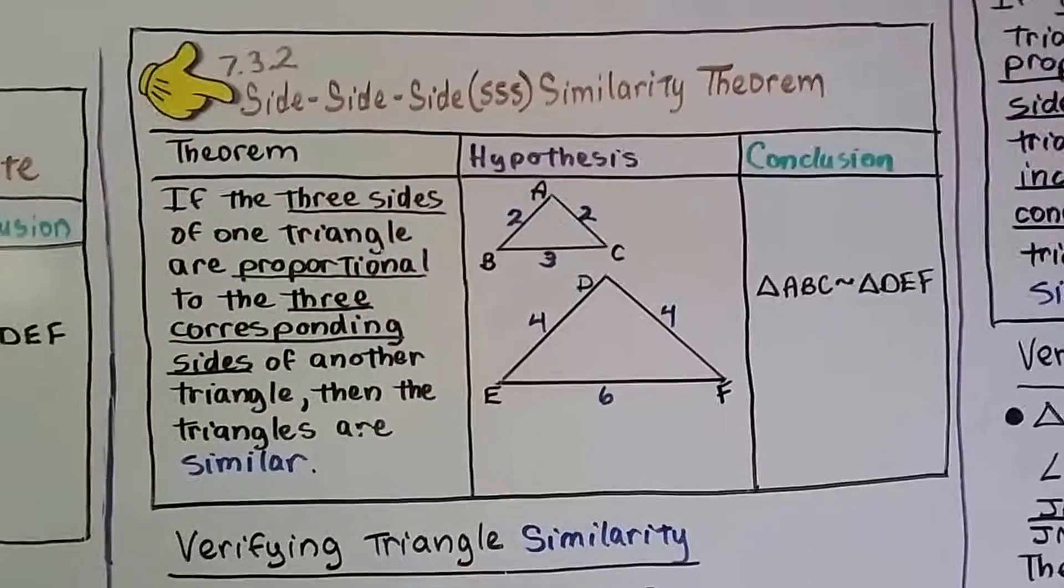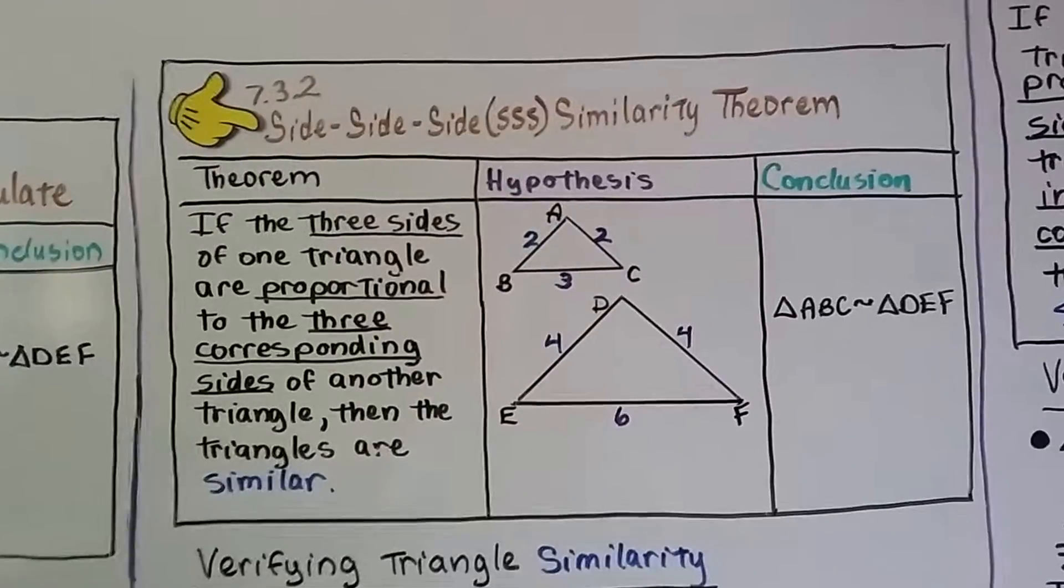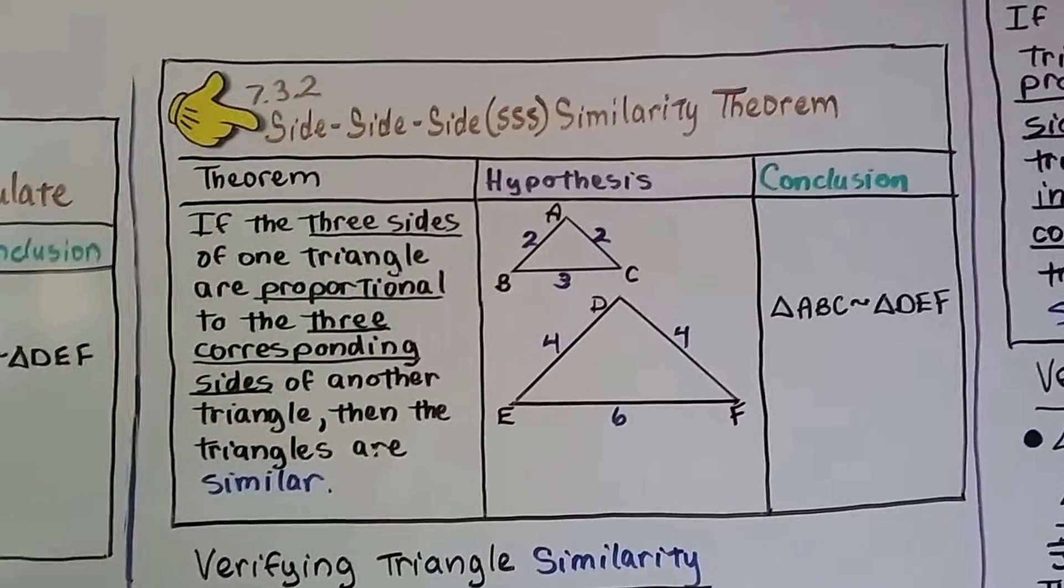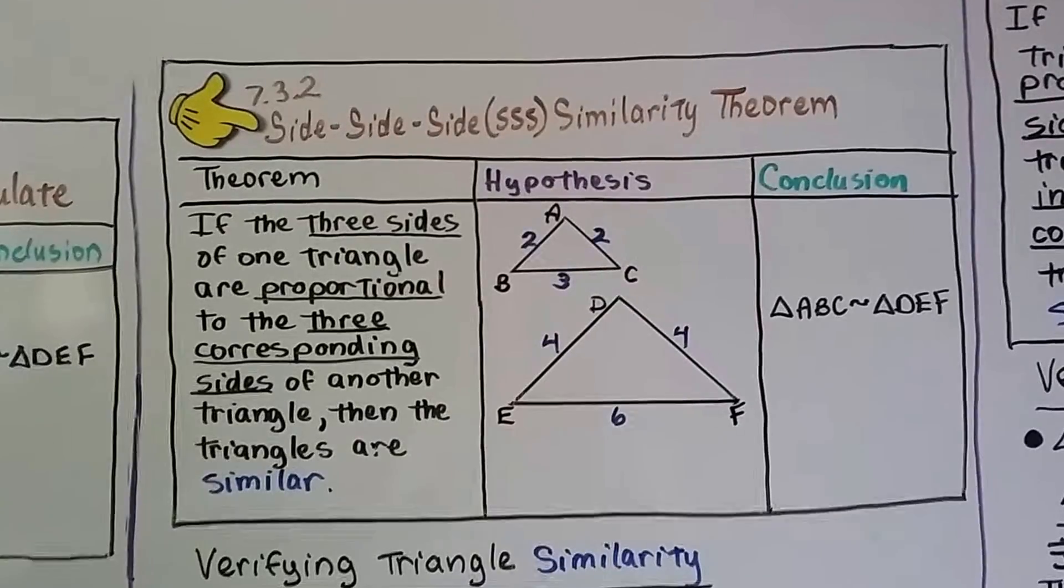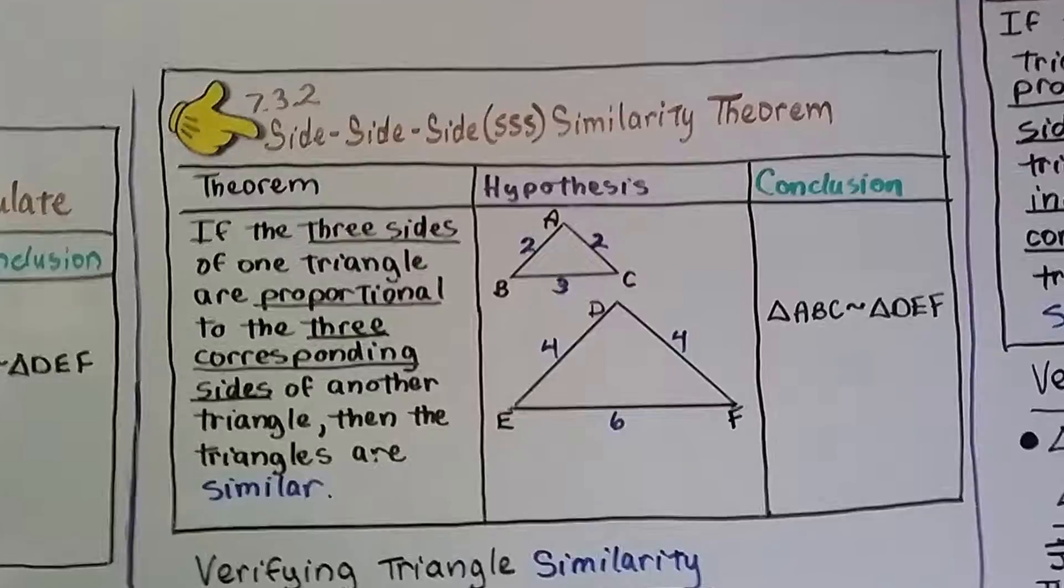Here's our first theorem. It's the side-side-side similarity theorem. It says if the three sides of one triangle are proportional to the three corresponding sides of another triangle, then they are similar. It's very important that you notice that it says corresponding sides.